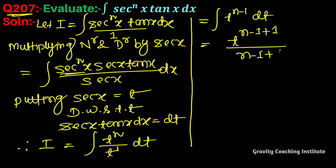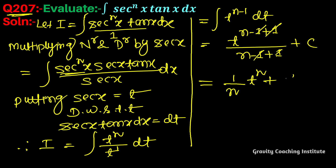Simplifying, this becomes one by n into t to the power n plus C. Now substituting back t equals sec(x), the answer is one by n times sec^n(x) plus C.